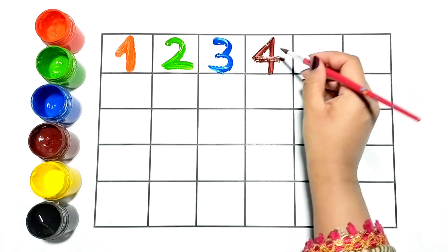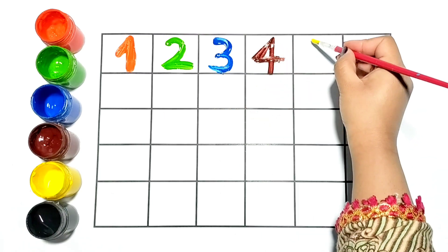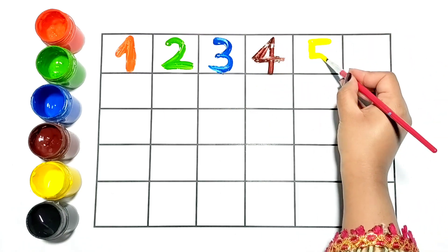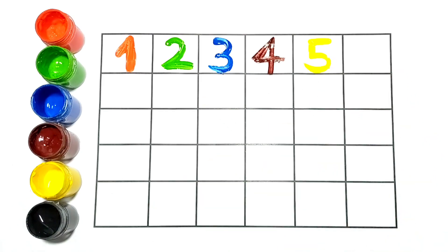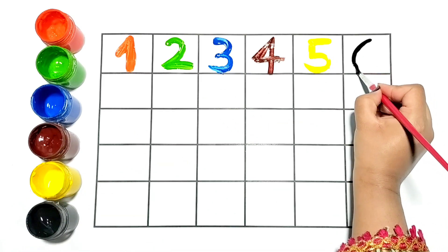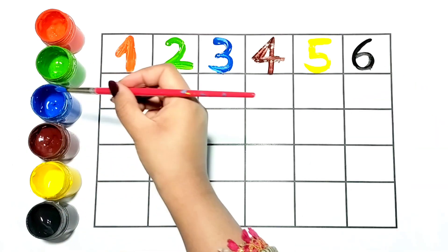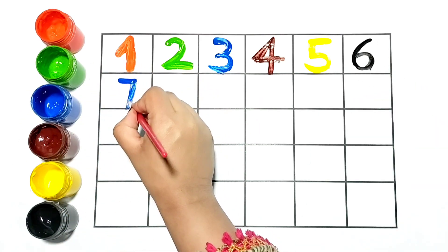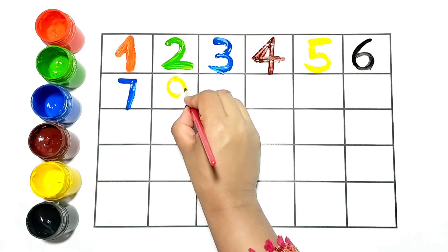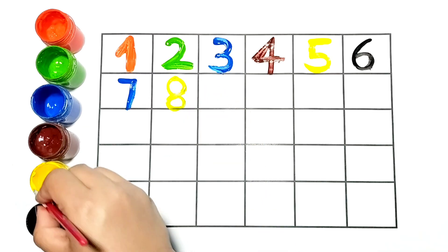Brown. Number is 5, yellow color. Now let's write 6 with black color. This is number 7. Let's write number 8, yellow color.